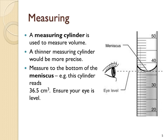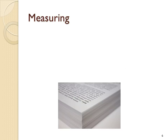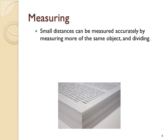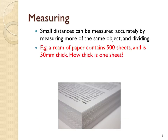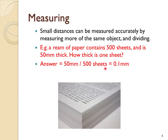When reading a measuring cylinder, measure to the bottom of the meniscus — the liquid curves up slightly at the edges, so make sure your eye is level with the bottom of the meniscus before reading it. If you're measuring a very small distance, it's more accurate to measure more of the same object and then divide. For example, if a ream of paper measures 50 millimetres and has 500 sheets, divide to find the thickness of one sheet.